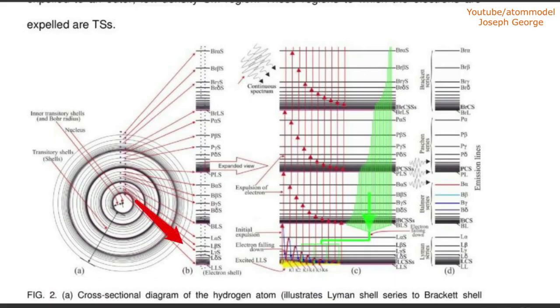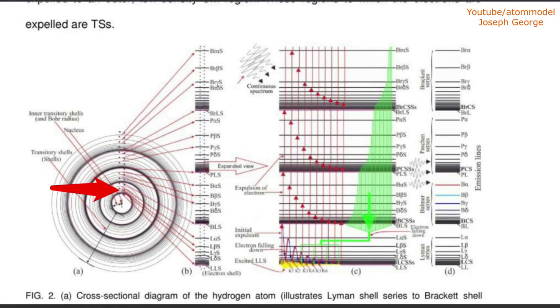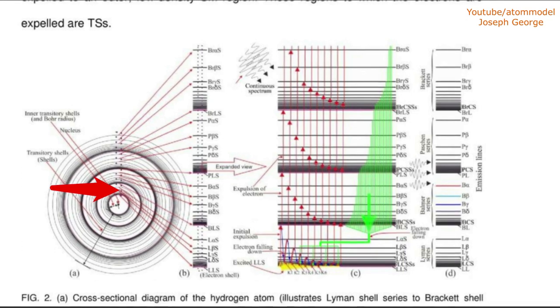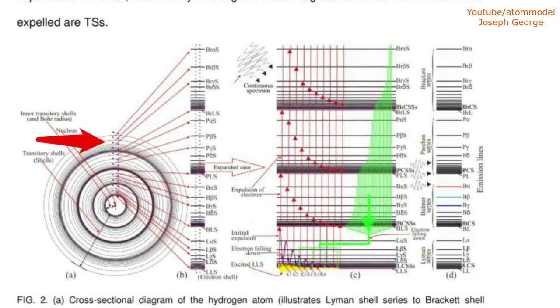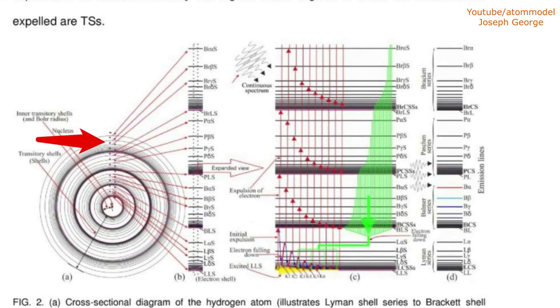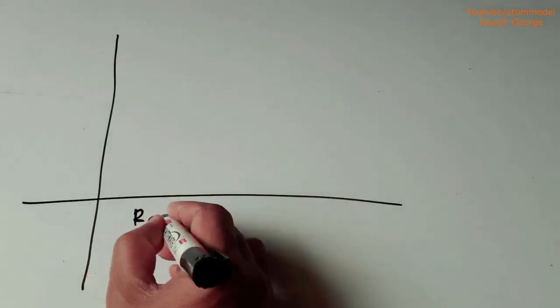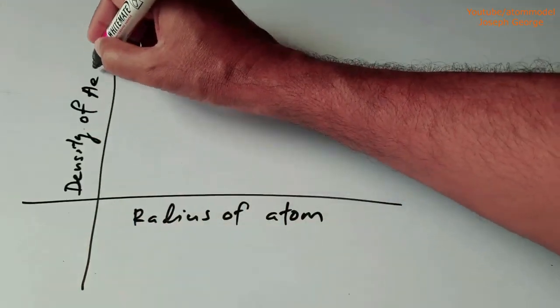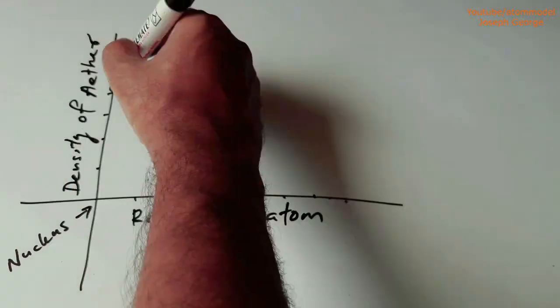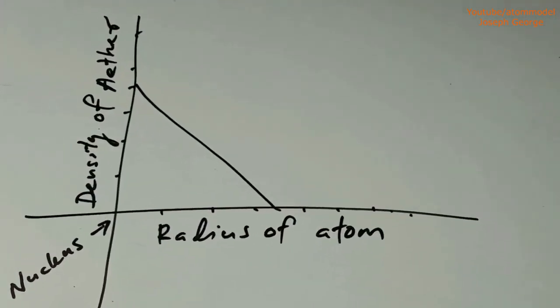Inner electrons emit short wavelength photons and outer electrons emit long wavelength photons. This suggests that inner regions have higher frequency resonant frequencies and outer regions have lower frequency resonant frequencies. This also shows that the density of ether near the nucleus is higher and it decreases with increasing distance from the nucleus.